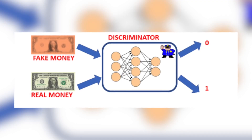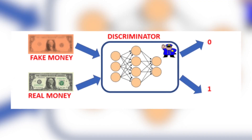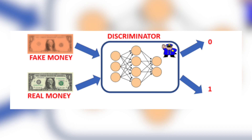The discriminator network is a basic neural network trained to perform a basic classification task. It will output zero, or a probability of zero, when the input image is fake, and will output one, or a probability of one, when the input image is real. So let's put the generator and the discriminator together and train them in one shot.